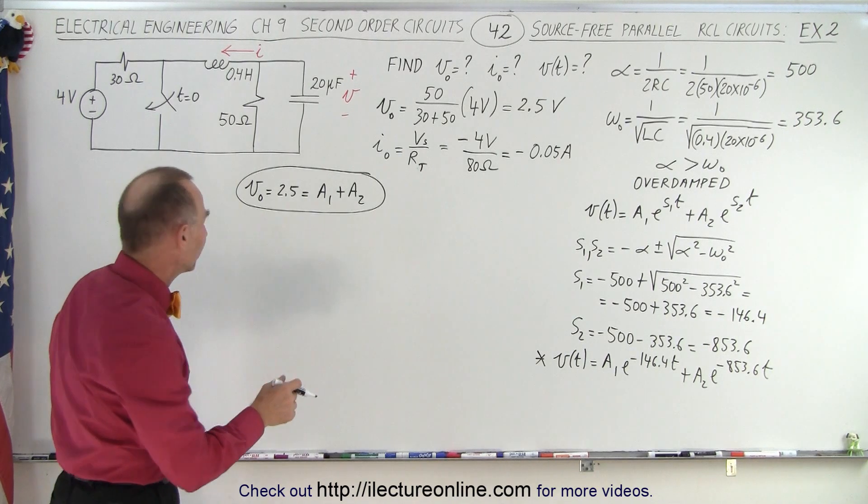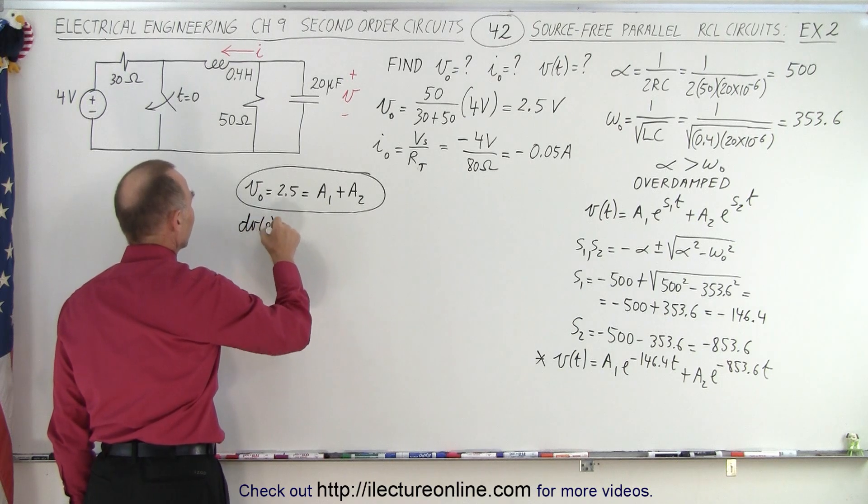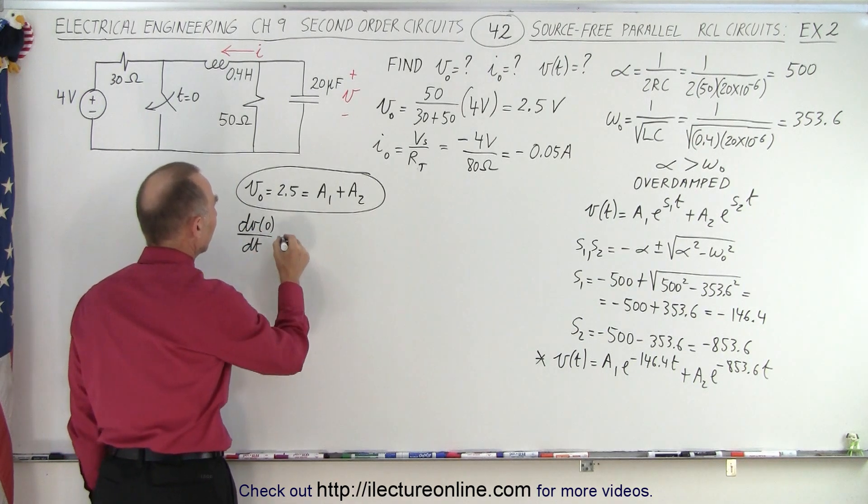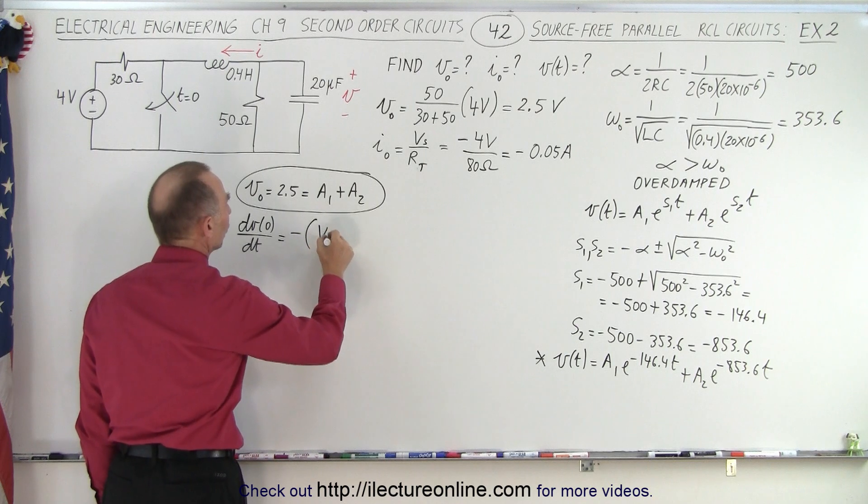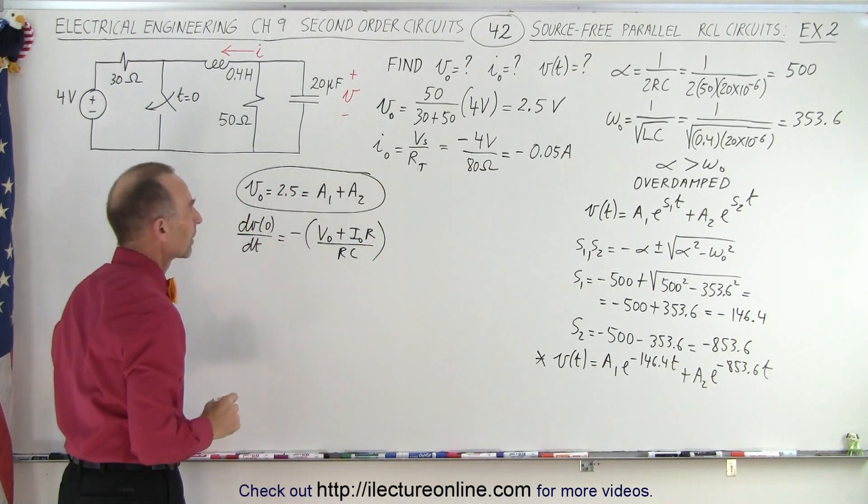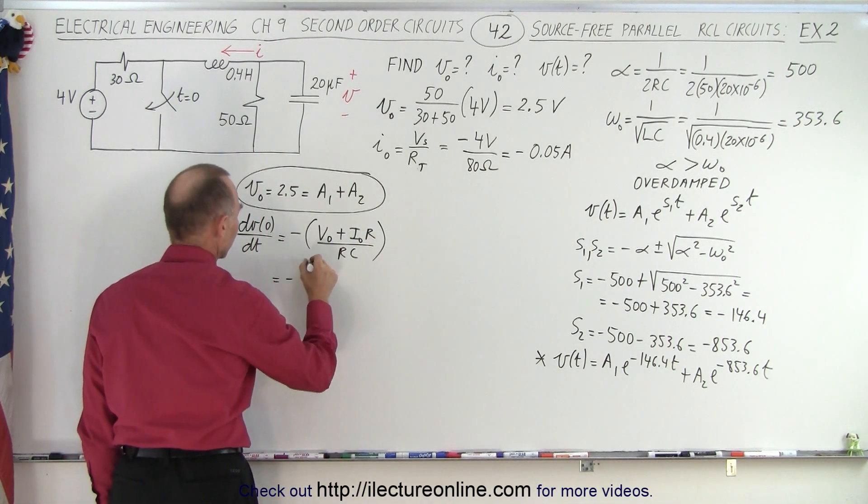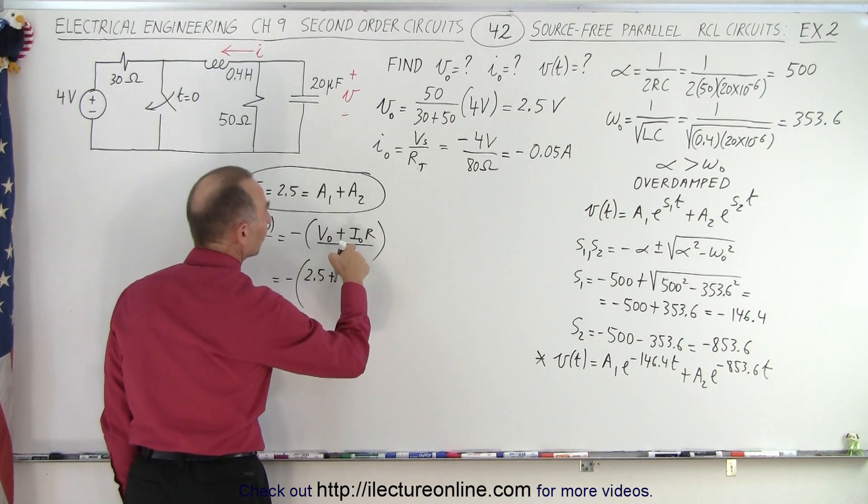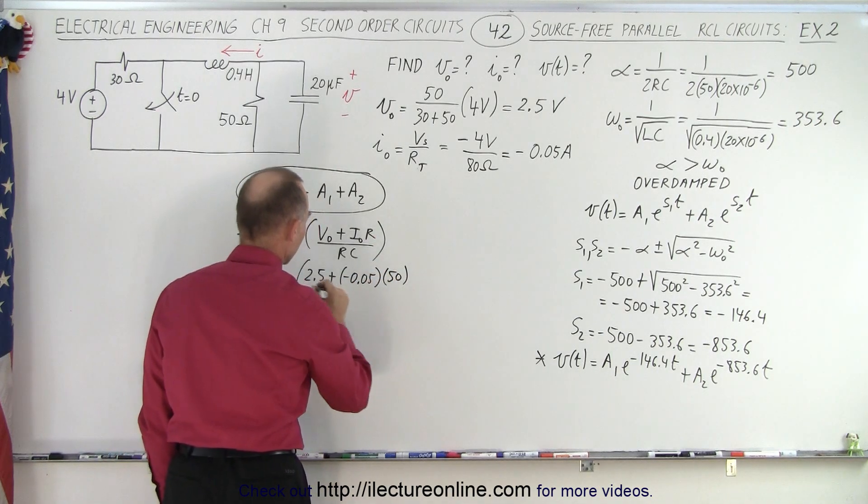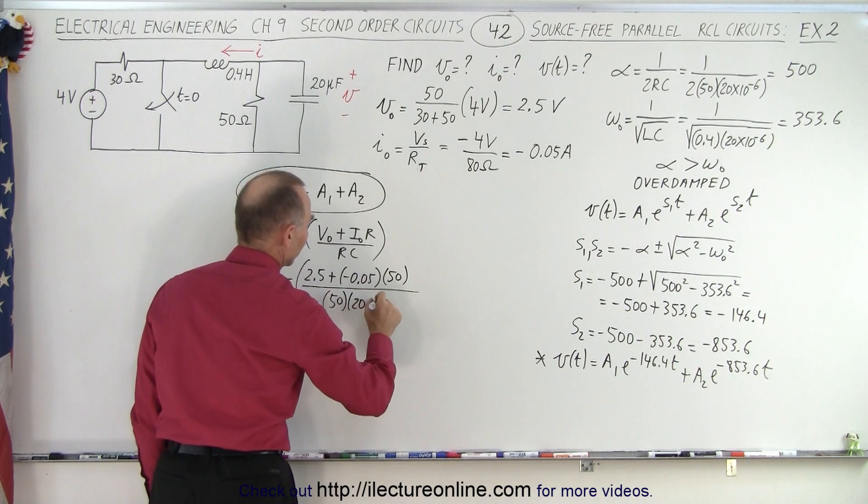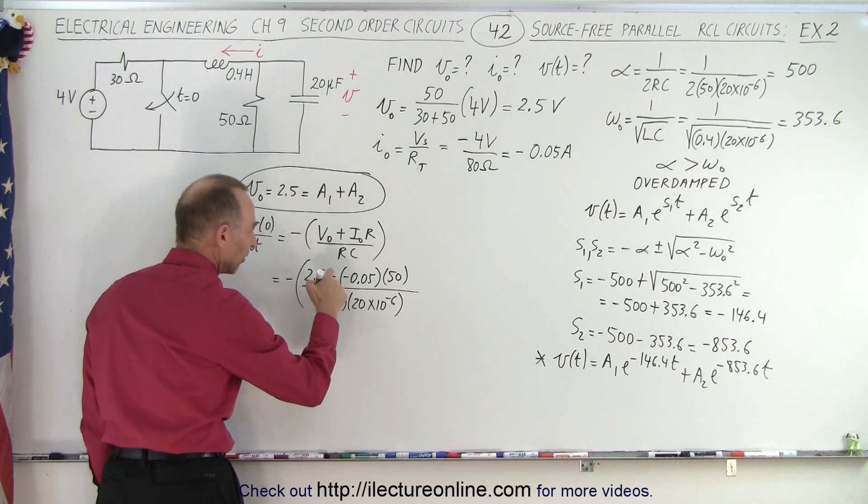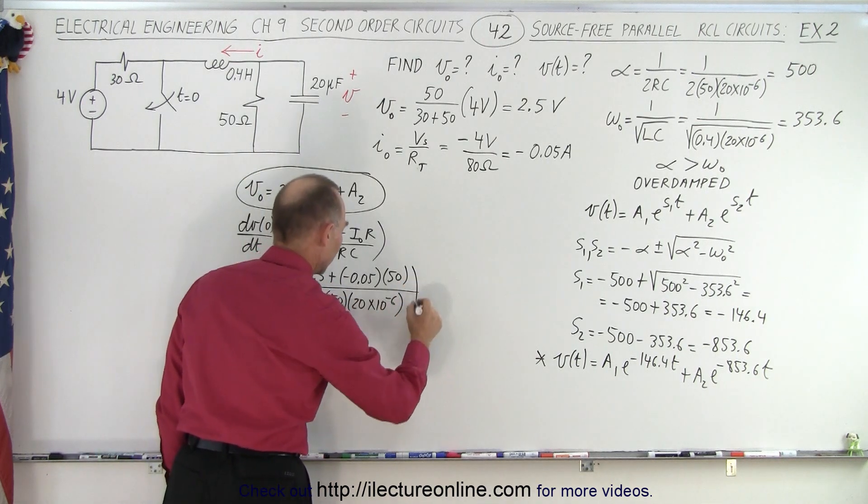Now we need to find the derivative of the voltage when time is equal to 0, of DT. So DVDT when time equals 0, that's essentially what we're finding. And we know that it's equal to minus the initial voltage plus the initial current times R, divided by RC. So that's equal to minus, the initial voltage is 2.5, plus the initial current, which is minus 0.05, times the resistance, which is 50, divided by 50 times 20 times 10 to the minus 6. But if you look at it, 50 times this gives us minus 2.5 plus 2.5, that actually is equal to 0.